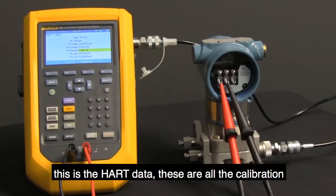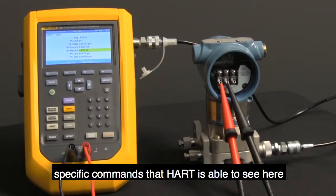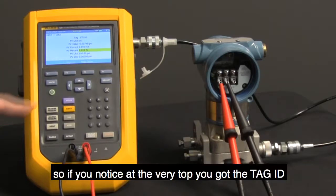On this screen, this is the HART data. These are all the calibration-specific commands that HART is able to see here. So if you notice, at the very top, you've got the tag ID.